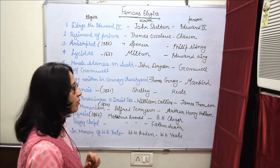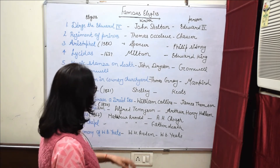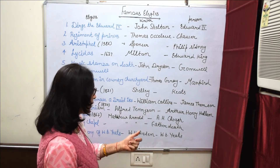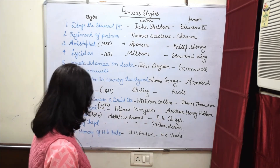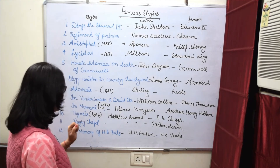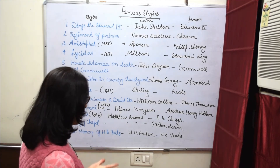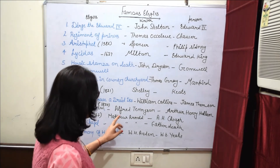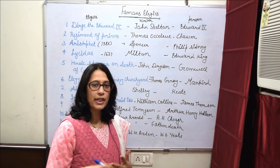Next है Thyrsis — Thyrsis किसने लिखी है? Matthew Arnold ने लिखी है, Arthur Hugh Clough की death के ऊपर। आगला है Rugby Chapel — Rugby Chapel भी Matthew Arnold के द्वारा लिखी गई है।